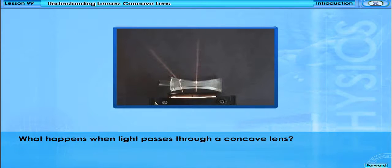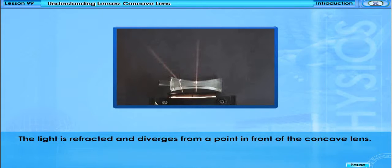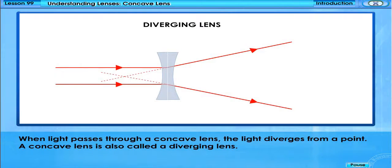What happens when light passes through a concave lens? The light is refracted and diverges from a point in front of the concave lens. When light passes through a concave lens, the light diverges from a point. A concave lens is also called a diverging lens.